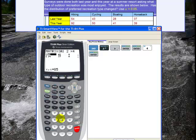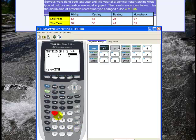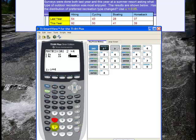And now I just type in the data. 54, 43, 28, 37, 92, 50, 41, and 39.